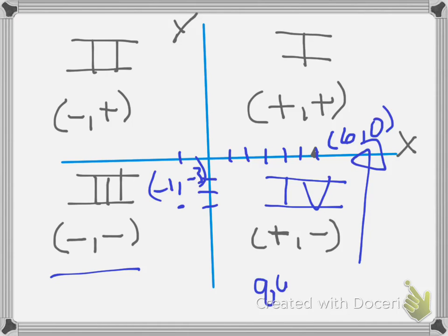Q-U-A-D-R-A-N-T-A-L? Or E-N-T-A-L? Quadrental. I don't know. Look it up. But, if a point lands right on the axis, then it's quadrental.